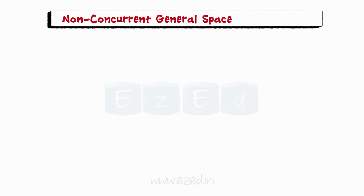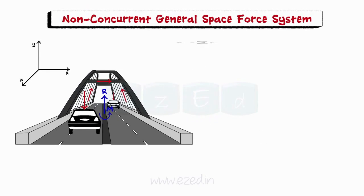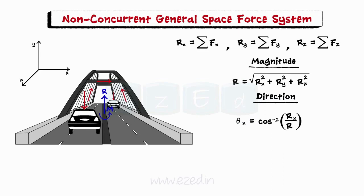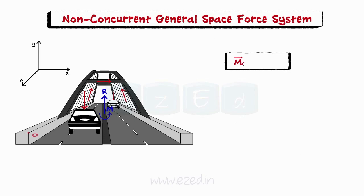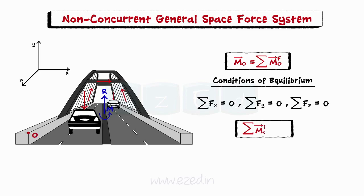Now we will consider the non-concurrent general force system. A non-concurrent general force system can be simplified into a single resultant force and a couple moment at a specified point. To find the magnitude of the resultant, we first find the component of the resultant in all three directions. The magnitude and direction of the resultant force are calculated similar to a concurrent force system. The resultant couple moment about the specified point can be obtained by simply adding all the couple moments about that point. The conditions of equilibrium are that the summation of forces in all directions should be equal to zero, and the summation of moments of all forces about any axis should be equal to zero.